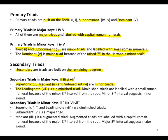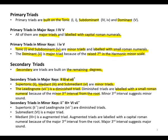The leading note, which is the seventh, is a diminished triad. A diminished triad is labeled with a small Roman numeral because of the minor third interval from the root. Even though the diminished triad is different from other minor triads, the minor third from the root suggests a minor sound — that's why we label it with a small Roman numeral.